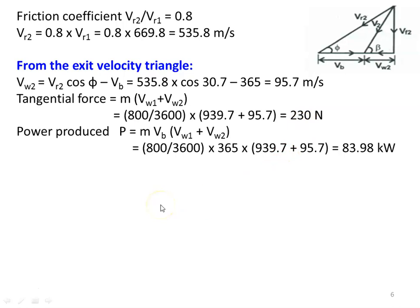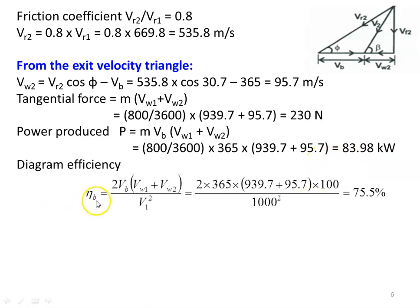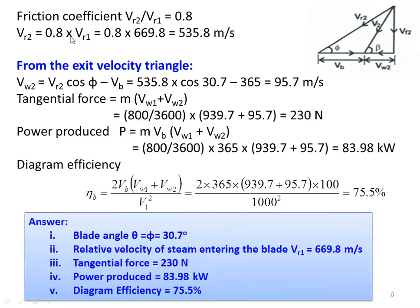Power produced equals M into VB into (VW1 plus VW2), which is (800/3600) into 365 into (939.7 plus 95.7), equal to 83.98 kilowatts. Diagram efficiency eta_B equals 2 VB(VW1 + VW2) divided by V1², equal to 83.7 percent. Results: blade angles theta equals β equals 30.7 degrees, relative velocity at inlet 669.8 m/s, tangential force 230 N, power 83.98 kW, diagram efficiency 75.5 percent.